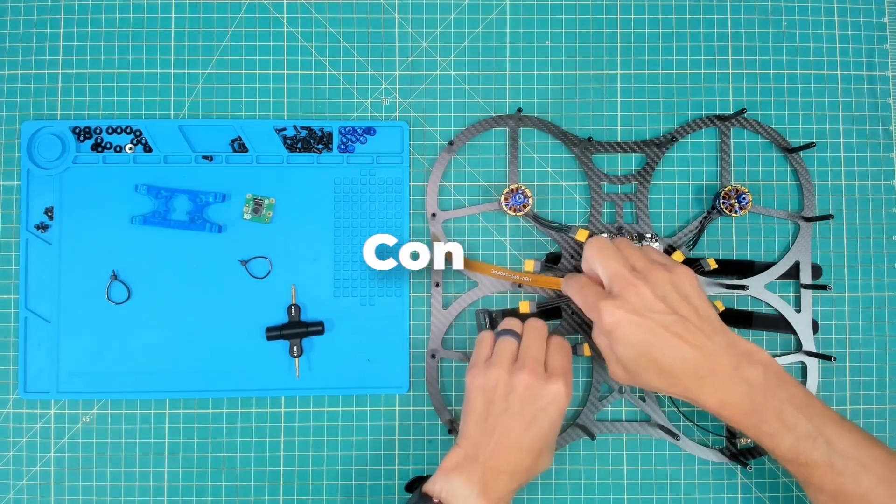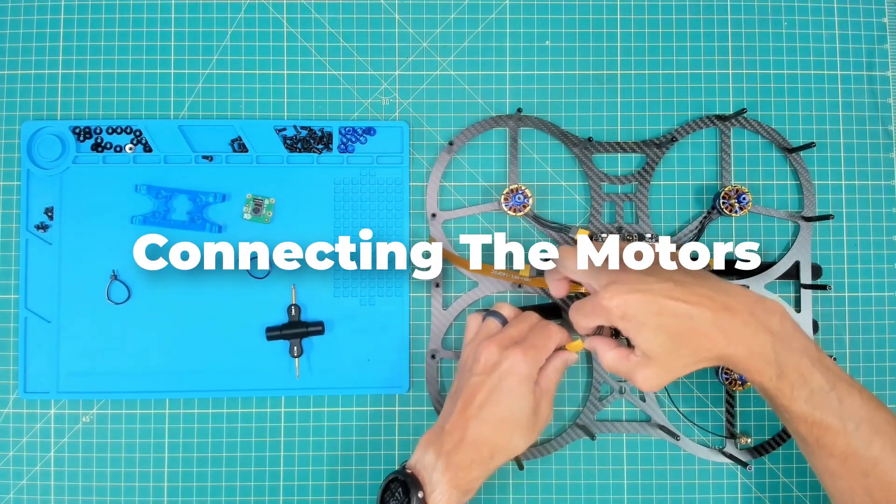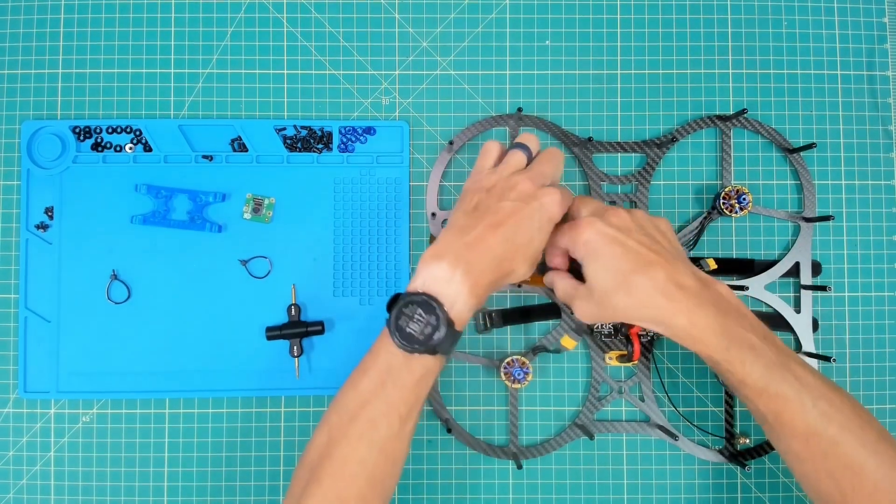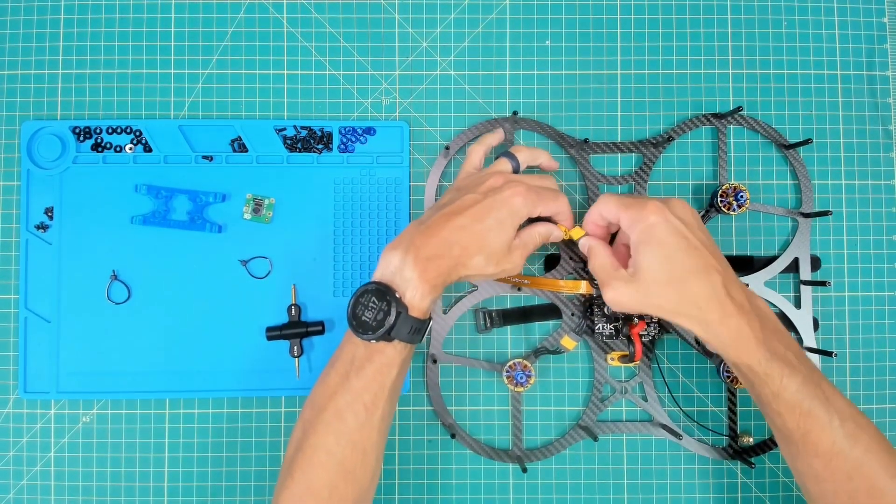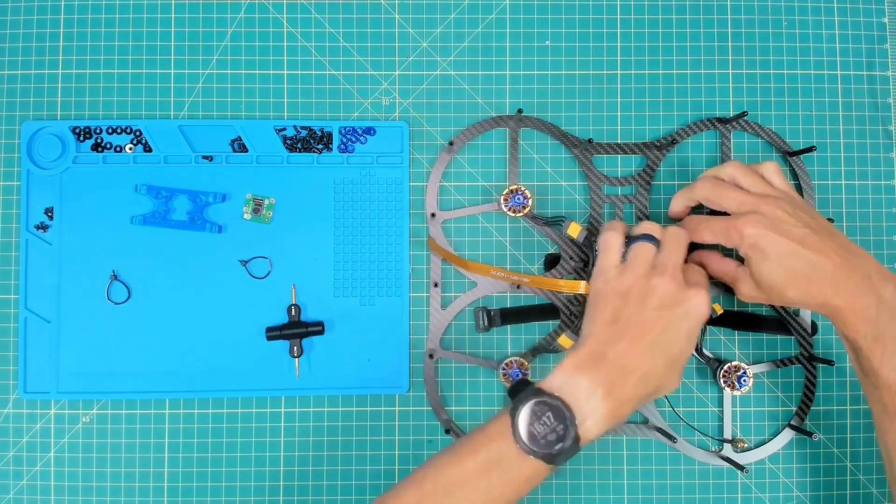Let's proceed with connecting our motors to the four-in-one ESC. You'll see we can just plug in at each corner. This makes it nice and simple for us to connect our motors and in the future do any repairs or upgrades.